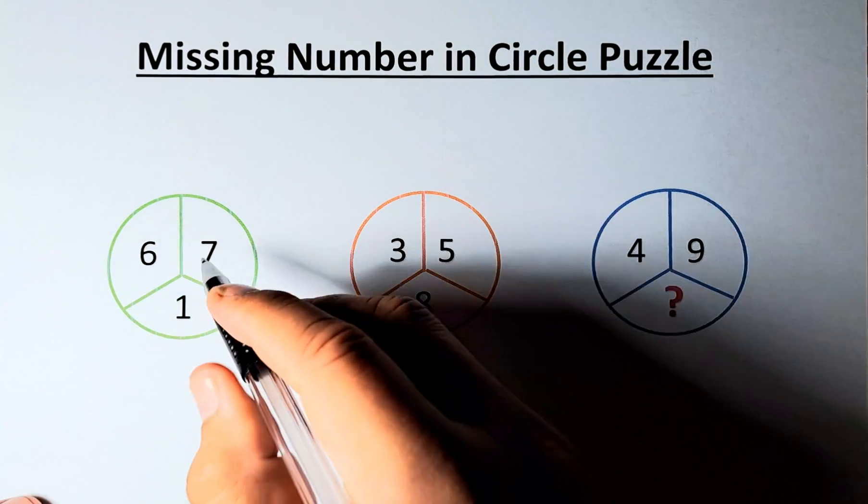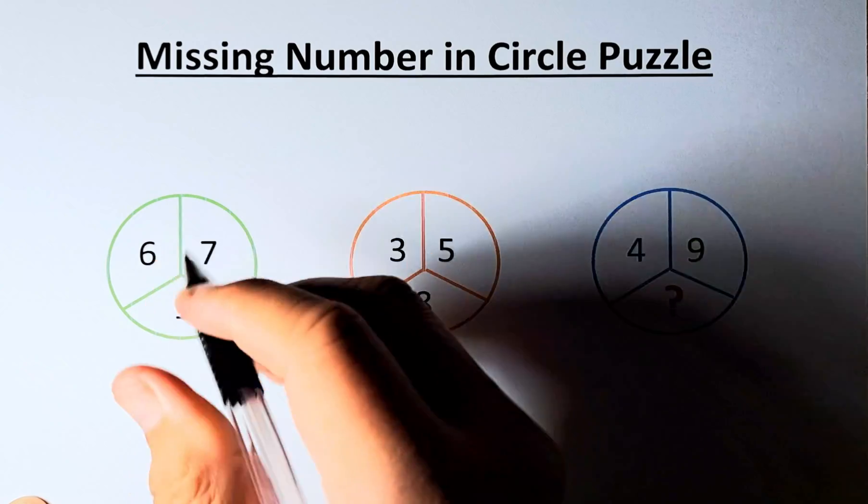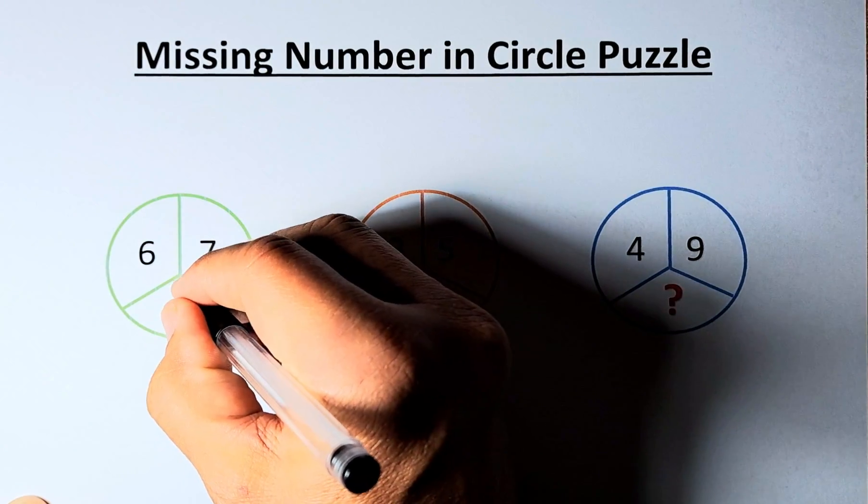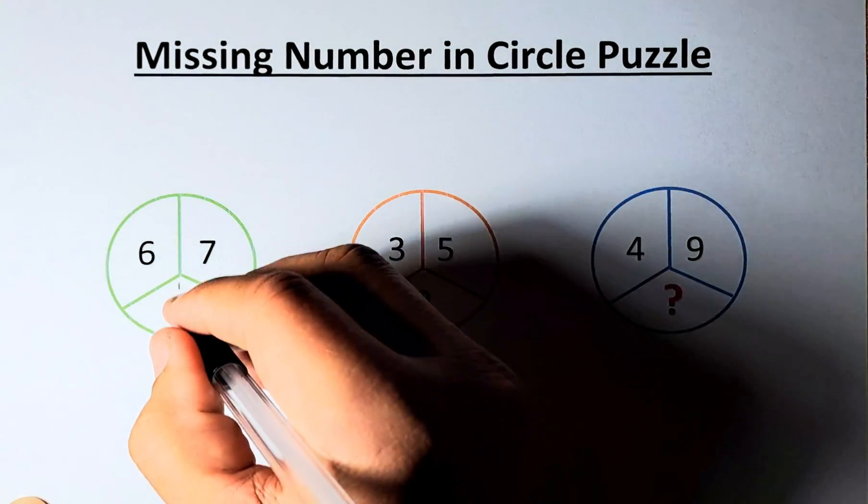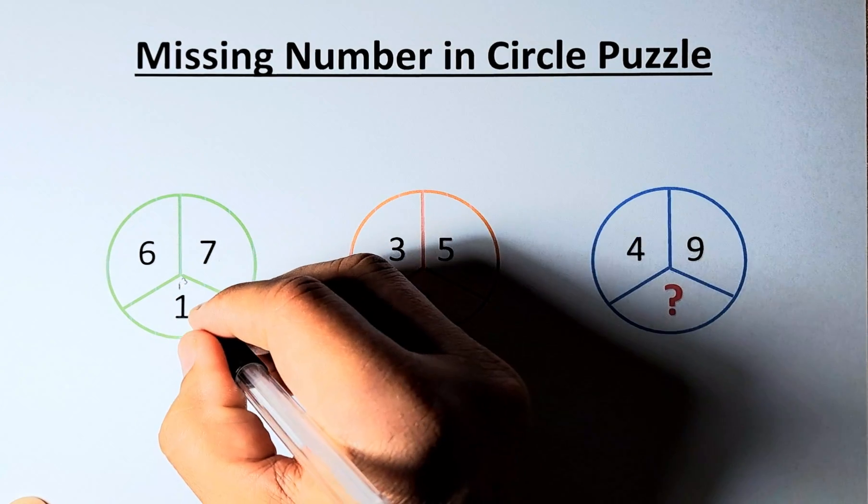To do that, you take 7 minus 6, that will be equal to 1. And then what you do, you are going to cube the answer. So, 1 cube is equal to 1.